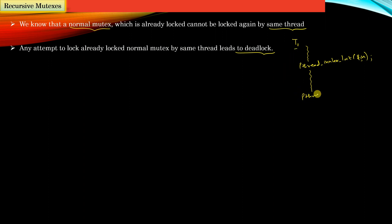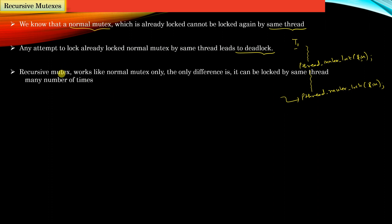The thread goes ahead and does some work, and due to some programming error, suppose thread T1 invokes the same API — that is, it tries to lock the same mutex again. At this point the thread will enter into a deadlock situation. When using a normal mutex, a thread that has already successfully obtained a lock will enter deadlock if it tries to lock the same mutex again.